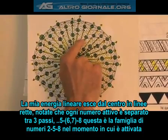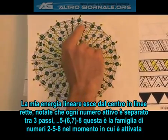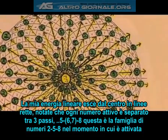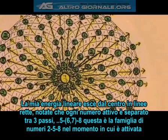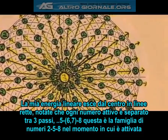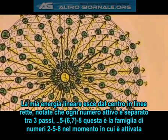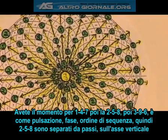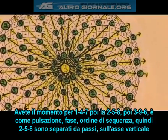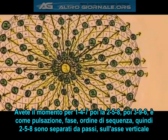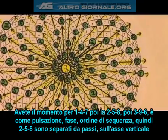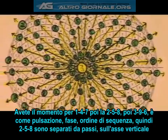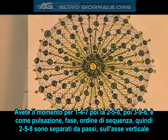You have 5, 6, 7, 8 — this is my 2, 5, and 8 family number group, the moment when it's activated. So you can have a moment for the 1, 4, 7s; a moment for the 2, 5, 8s; a moment for the 3, 9, 6. It's like a pulsing — a phasing or a sequence order.